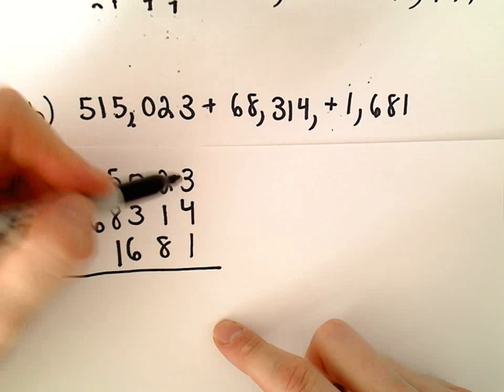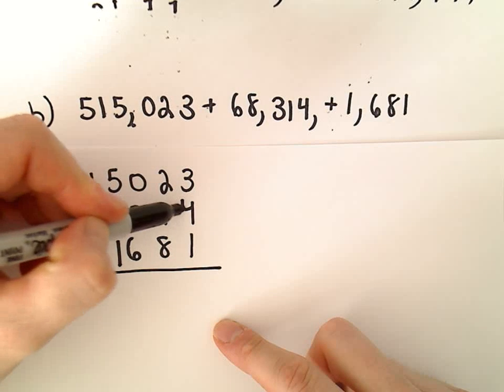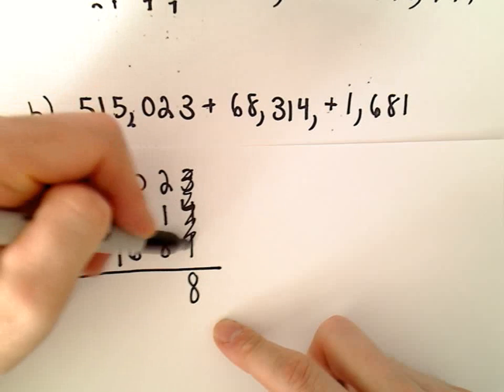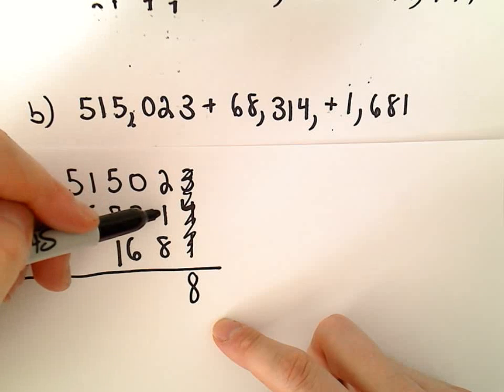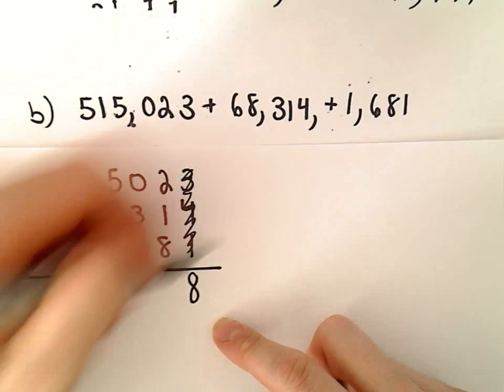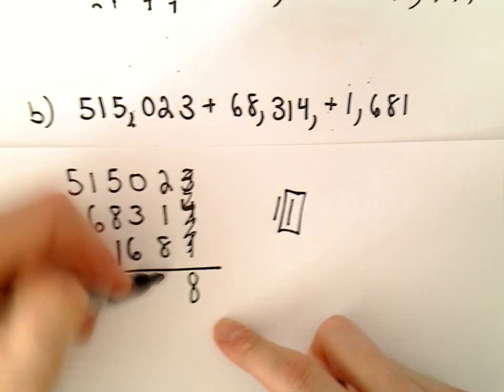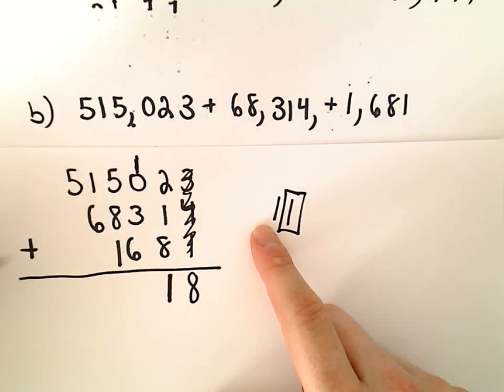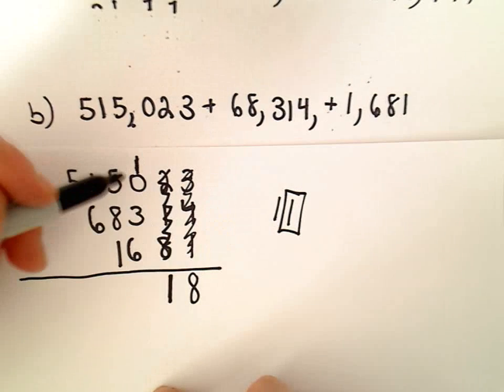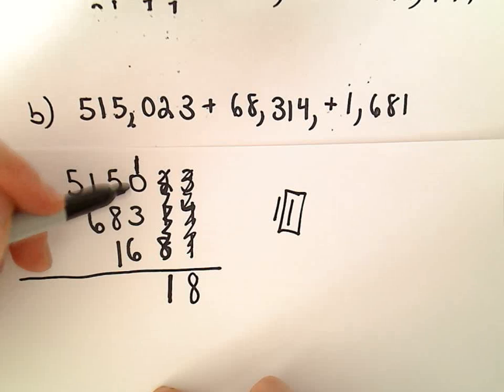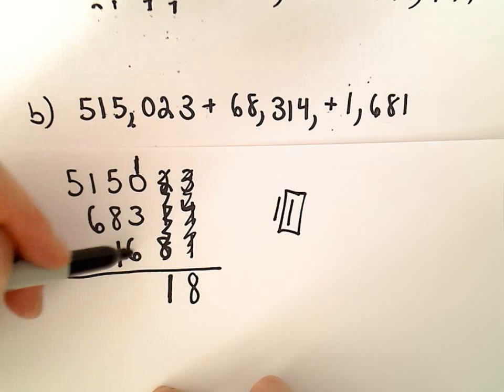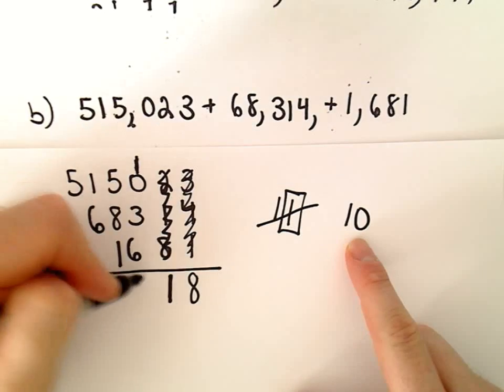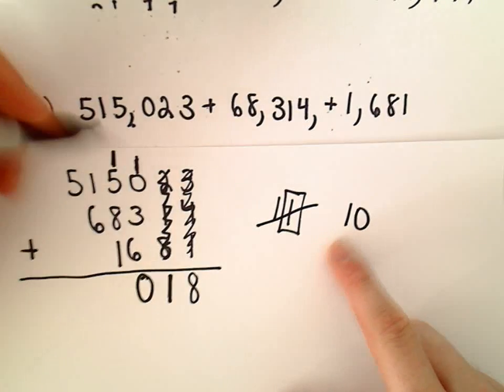Same idea, so a column at a time. So 3 plus 4 is 7, 7 plus 1 is 8. So I'm just going to drop down the 8, nothing to carry, so I've taken care of that column. 2 plus 1 is 3, 3 plus 8 is going to be 11. So I'm going to drop down the 1 and then I'm going to carry the other 1 to the top.